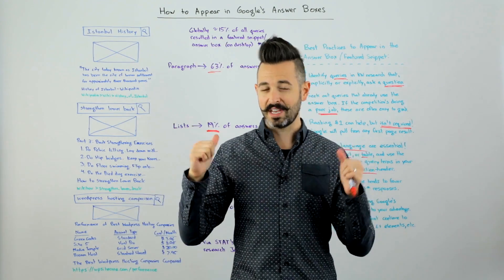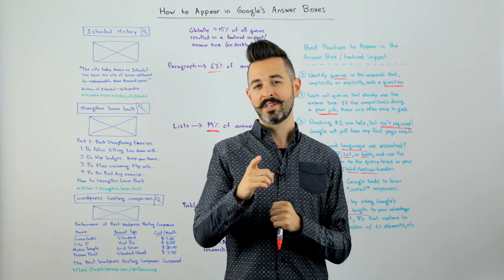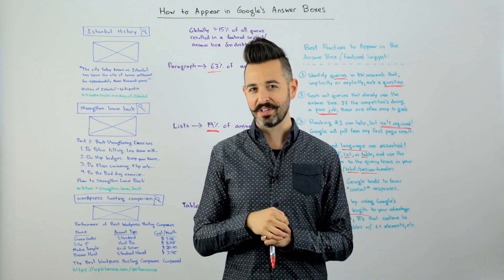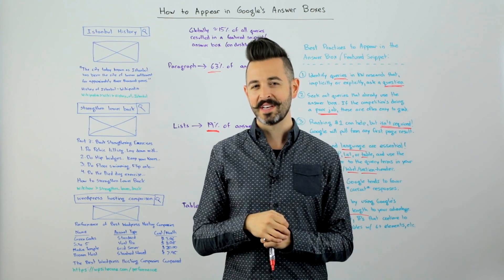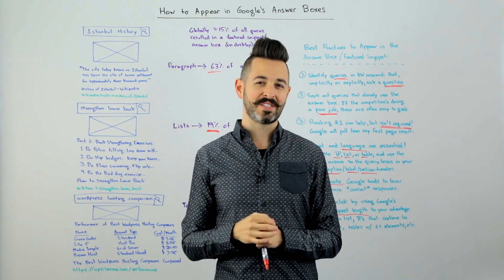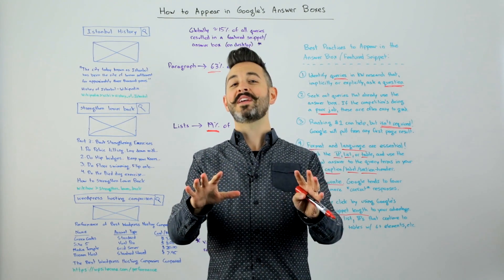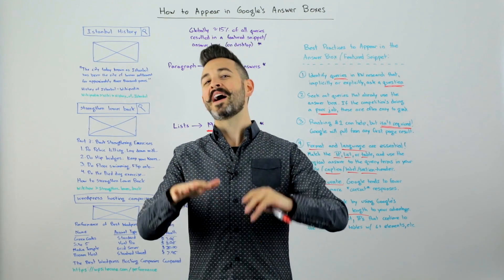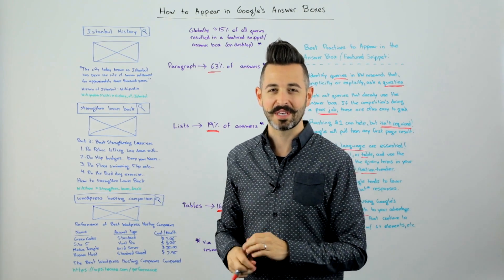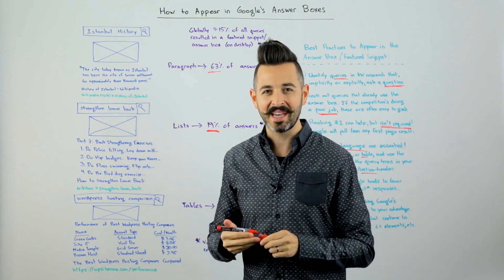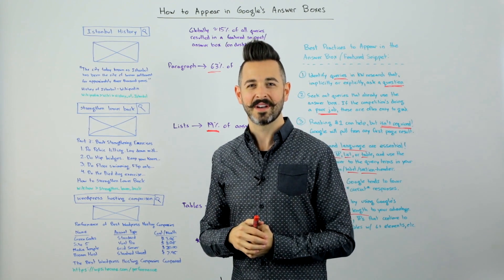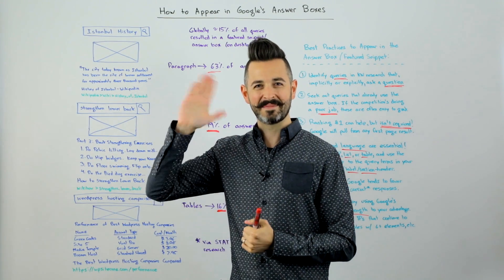With this information at your disposal, you should be armed and ready to take over some of those result number zeros, get some answer boxes and featured snippets on your side. I look forward to hearing your questions — I'd love to hear if you've got examples of featured snippets where you're ranking. We'll see you again next week for another edition of Whiteboard Friday. Take care.